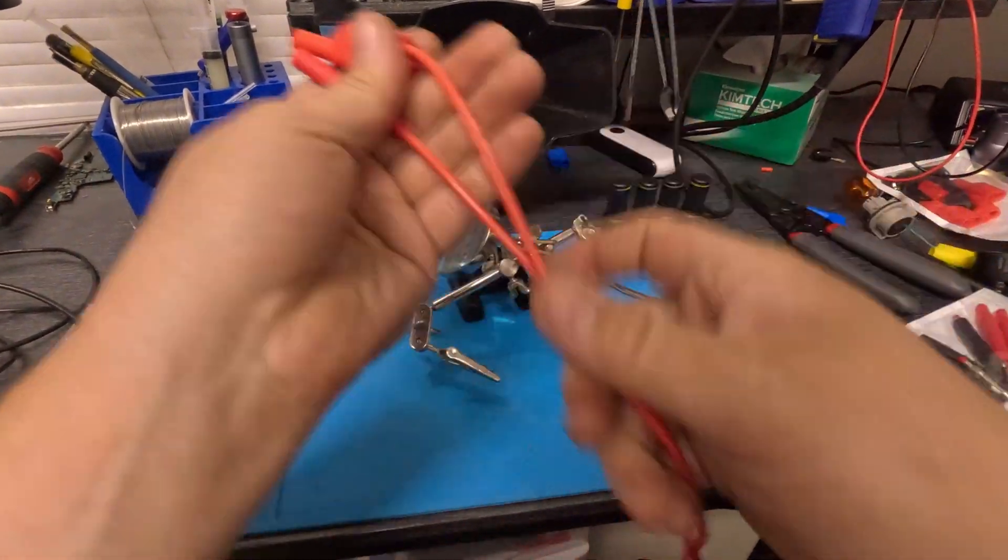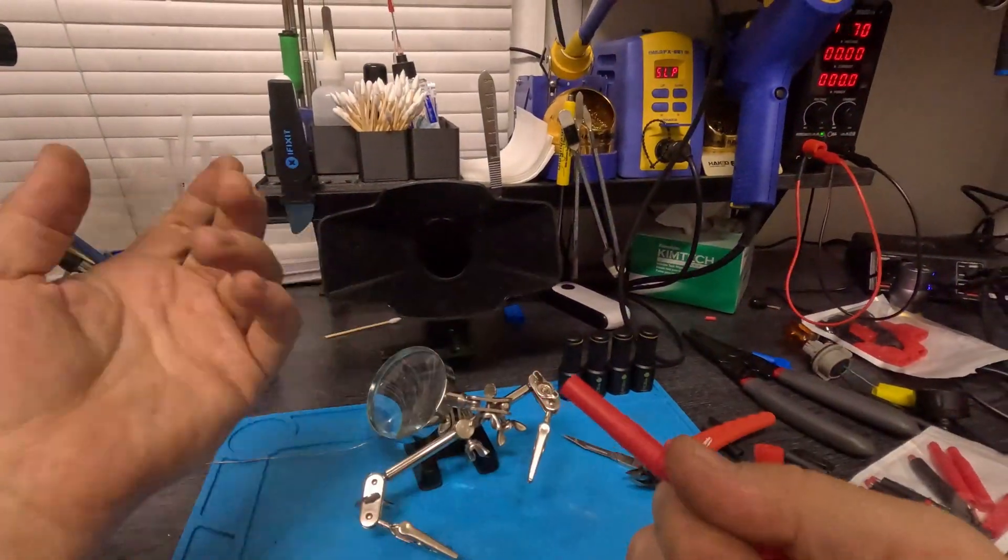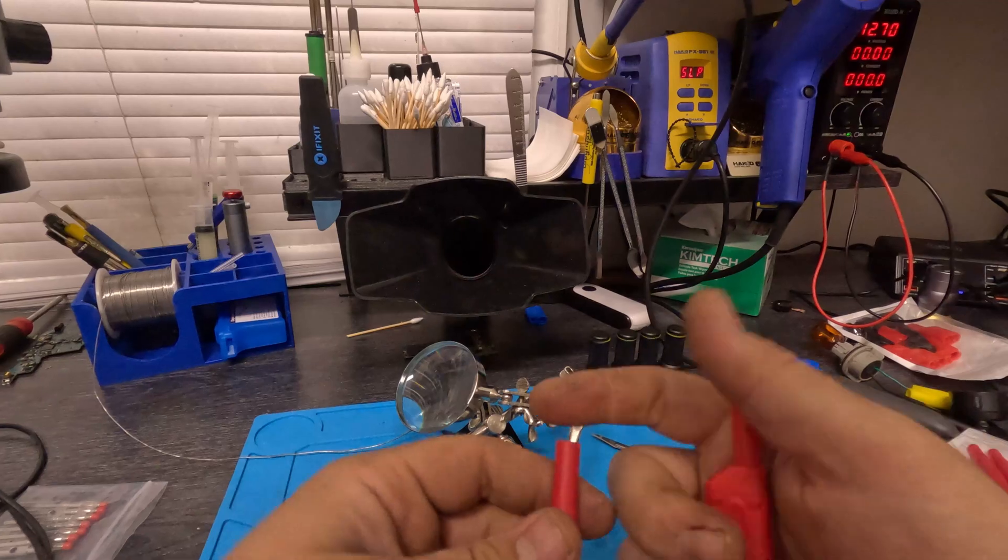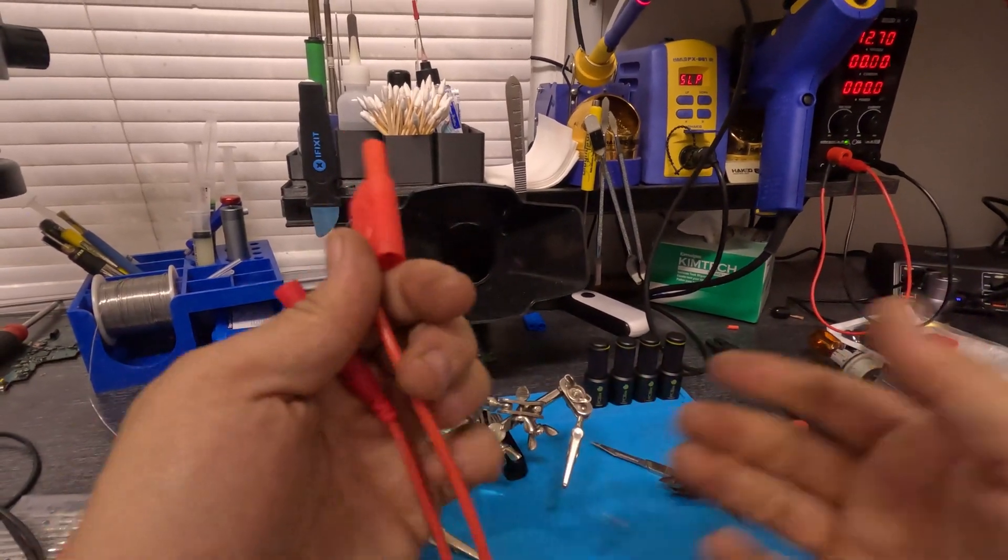Now you have a high quality lead. You could connect whatever you want to it. You could put a back probe on one side, you could put an alligator clip on the other.